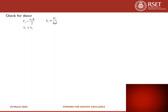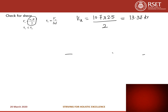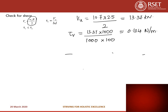For shear check: V_U = w_U × R / 2 = 10.7 × 2.5 / 2 = 13.37 kN. Shear stress tau_V = V_U / (b × d) = 13.37 × 1000 / (1000 × 100) = 0.134 N/mm². From Table 19 of IS456, tau_C ≈ 0.4 N/mm². Since tau_V < tau_C, the section is safe in shear.